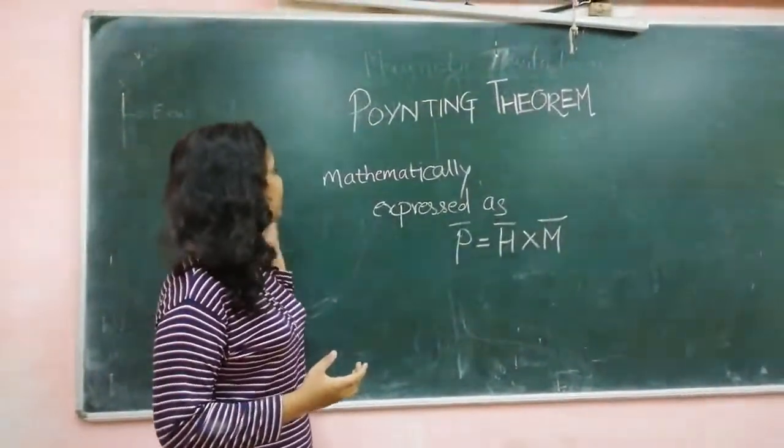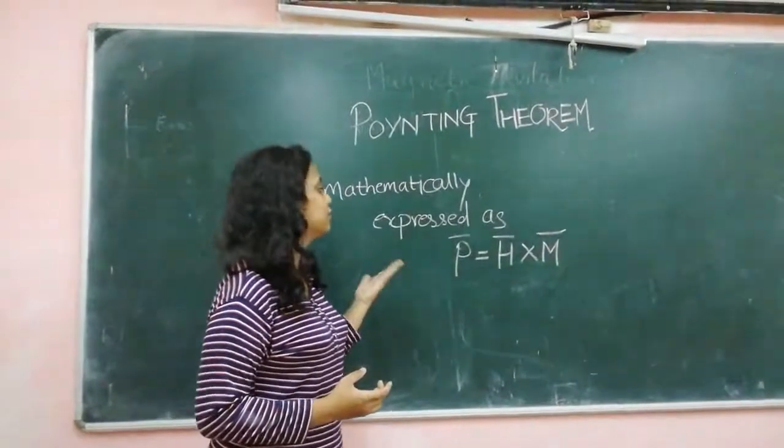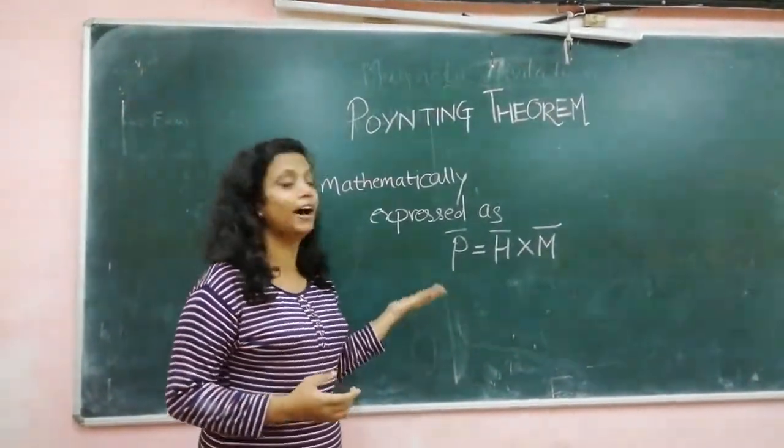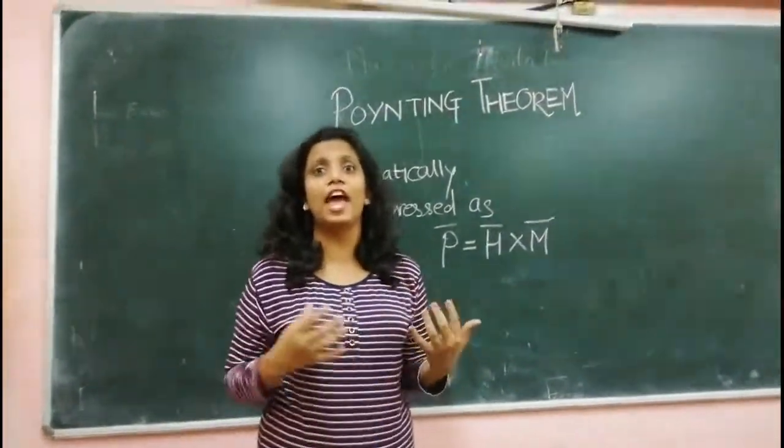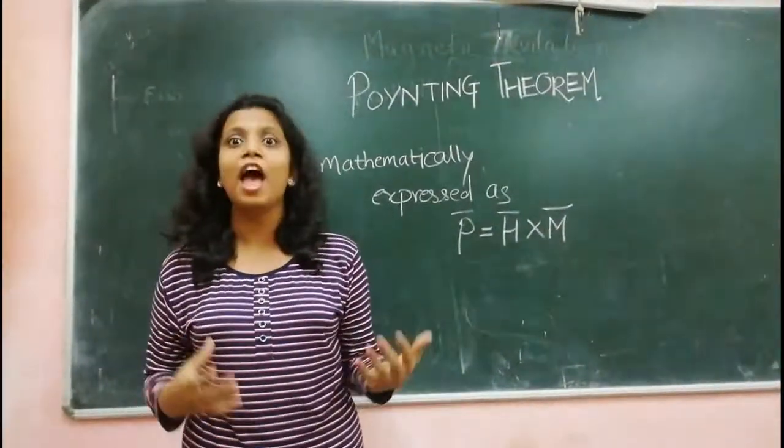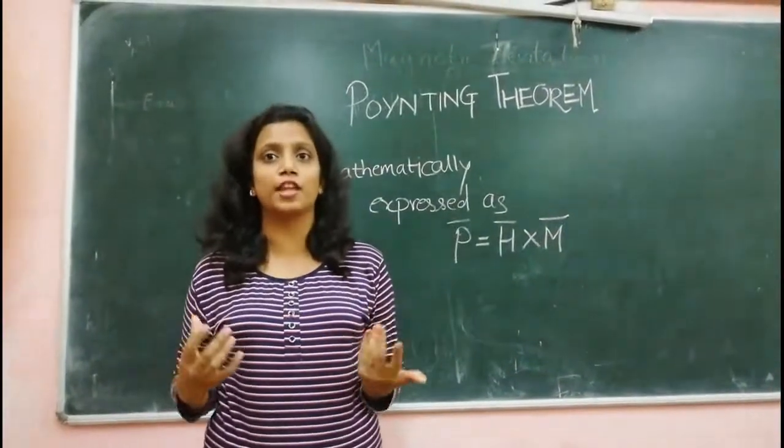The mathematical expression of Poynting Theorem is P bar equal to H bar cross M bar. The significance of the Poynting Theorem is that it gives the energy balance in the system and also proves the law of conservation of energy.